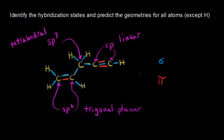If you count up all of those sigma bonds, you should get 10 — one, two, three, four, five, six, seven, eight, nine, and ten. We have 10 sigma bonds total. In terms of pi bonds, we had three pi bonds for this molecule.